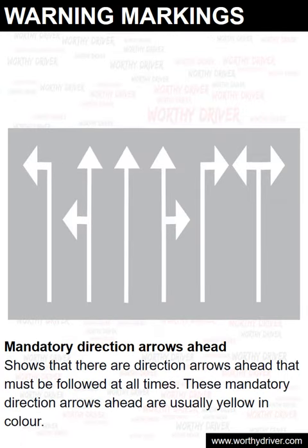Mandatory direction arrows ahead. This marking shows that there are direction arrows ahead that must be followed at all times. These mandatory direction arrows ahead are usually yellow in color.